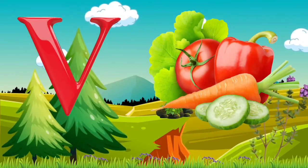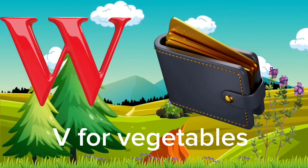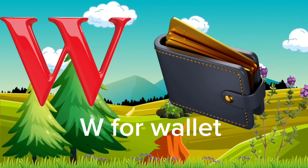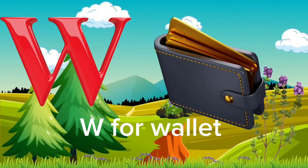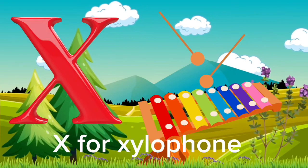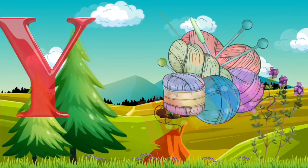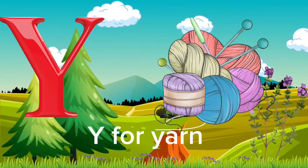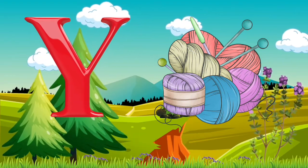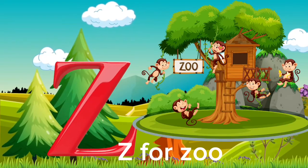V for vegetables, W for wallet, X for xylophone, Y for yarn, Z for zoo.